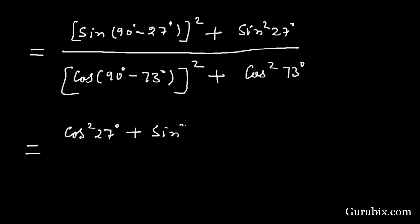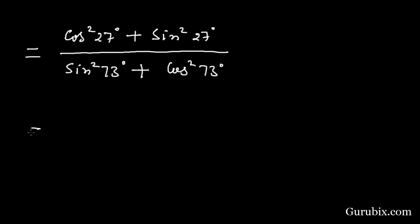In the denominator we have sine²73° + cos²73°, and this value is equals to 1.